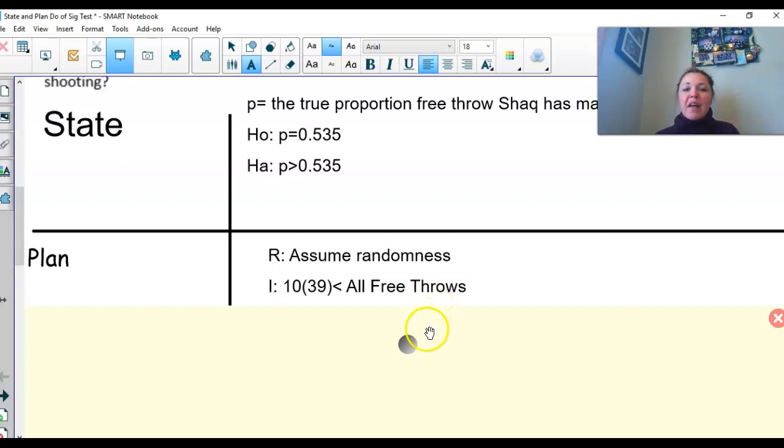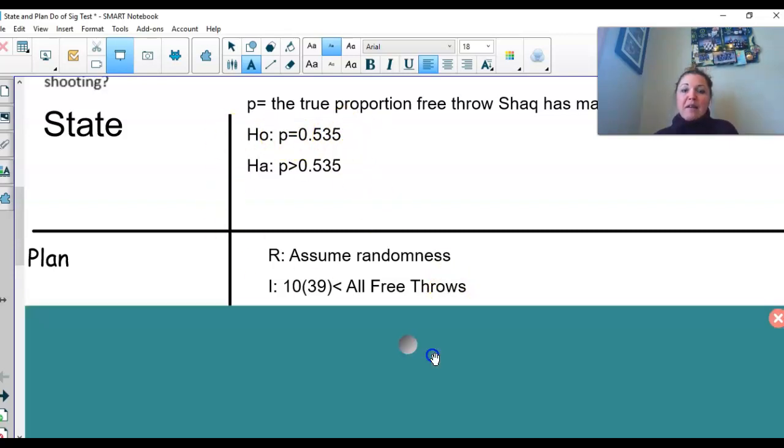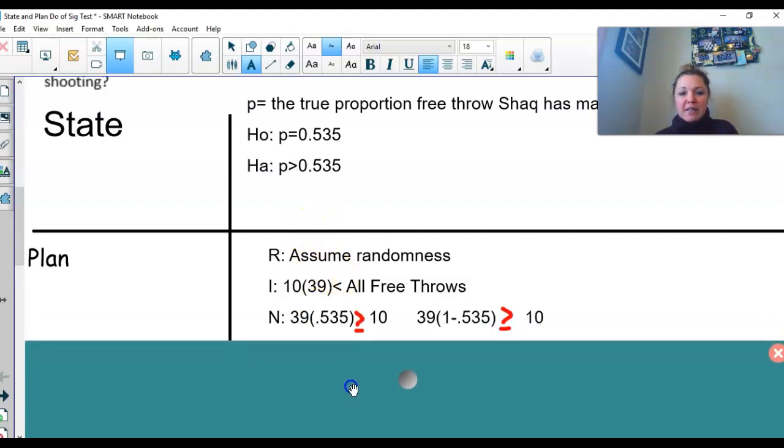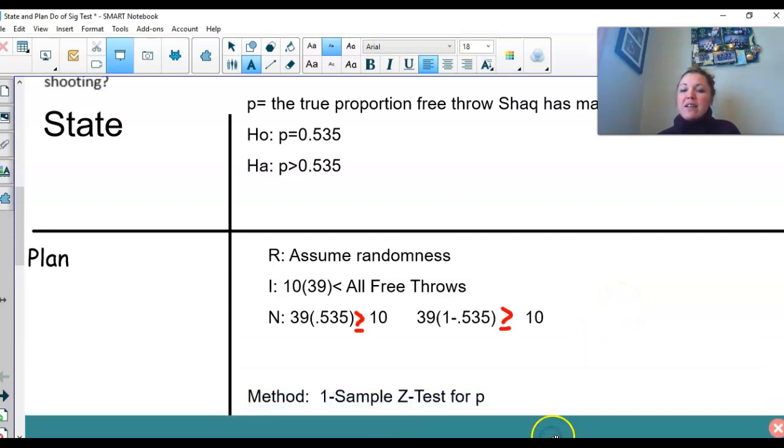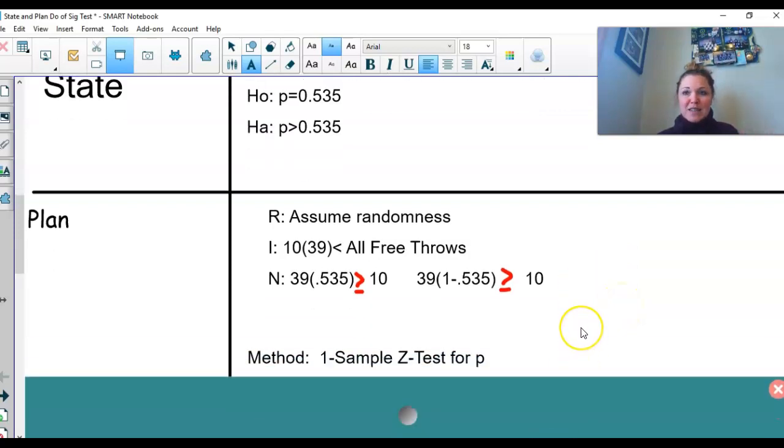Lastly is our N. We take our N times our P and our N times our 1 minus P, and that needs to be greater than or equal to 10. So our P in this case is 0.535. We always get it from that null hypothesis there. Our N we know is 39. So I took 39 times 0.535 is greater than or equal to 10, and 39 times 1 minus 0.535, and that's greater than or equal to 10. So now we have check, check, and check. We've met our conditions, and we are okay now to use a one sample Z test for P.